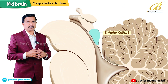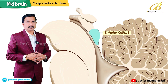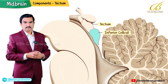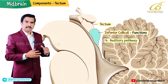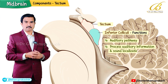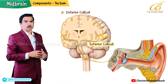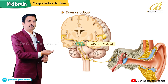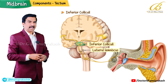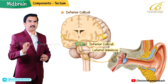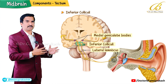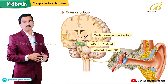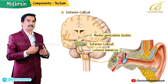The inferior colliculi are located in the tectum and are primarily involved in the auditory pathways. They play a key role in processing auditory information and sound localization. The inferior colliculi receive input from the lateral lemniscus, a major auditory pathway, and relay information to the medial geniculate bodies, which are part of the thalamus and involved in auditory perception.